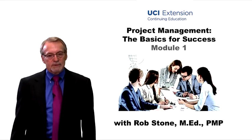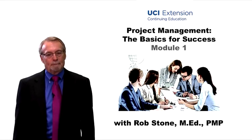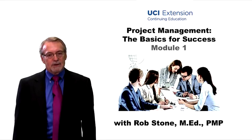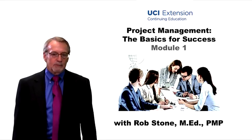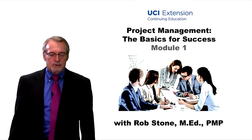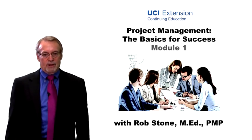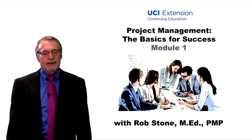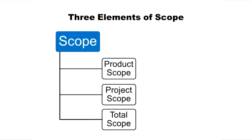It's time to talk about scope. Scope is a confusing term because there are three ways to talk about it, and most people don't think about that. Most people talk about the product scope — what does the thing look like when it's done? We're always looking for 'done looks like this.' Upfront, the question is: what does done look like for this project? That's the product scope.